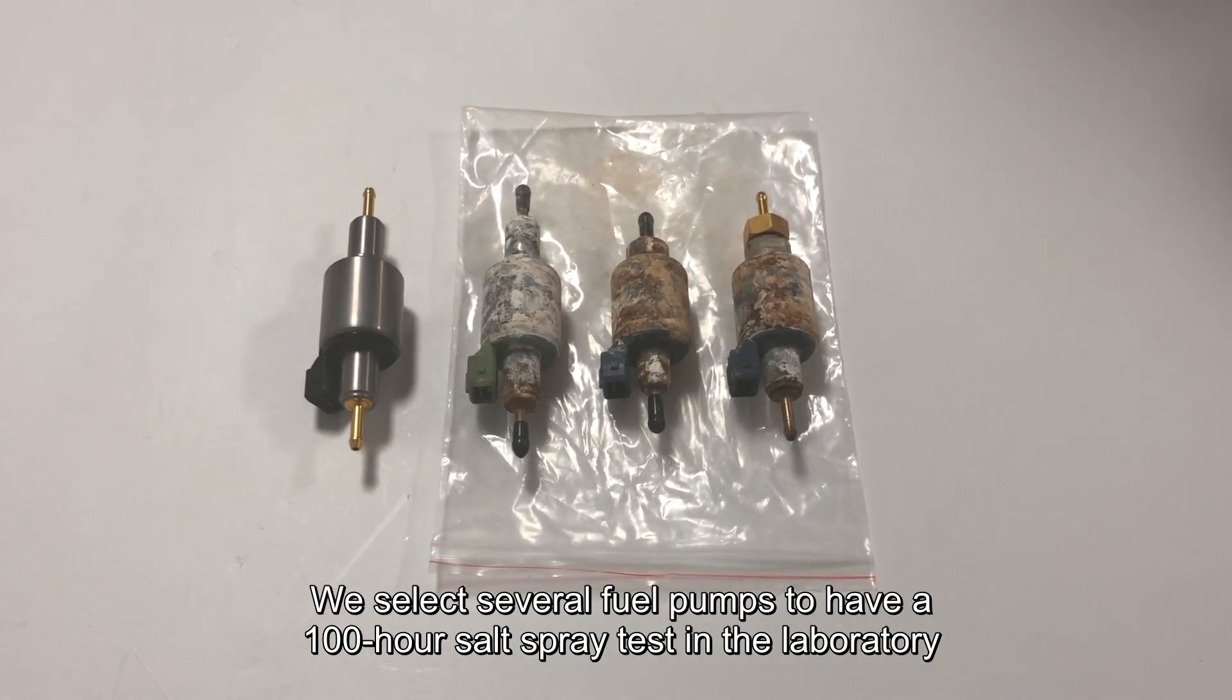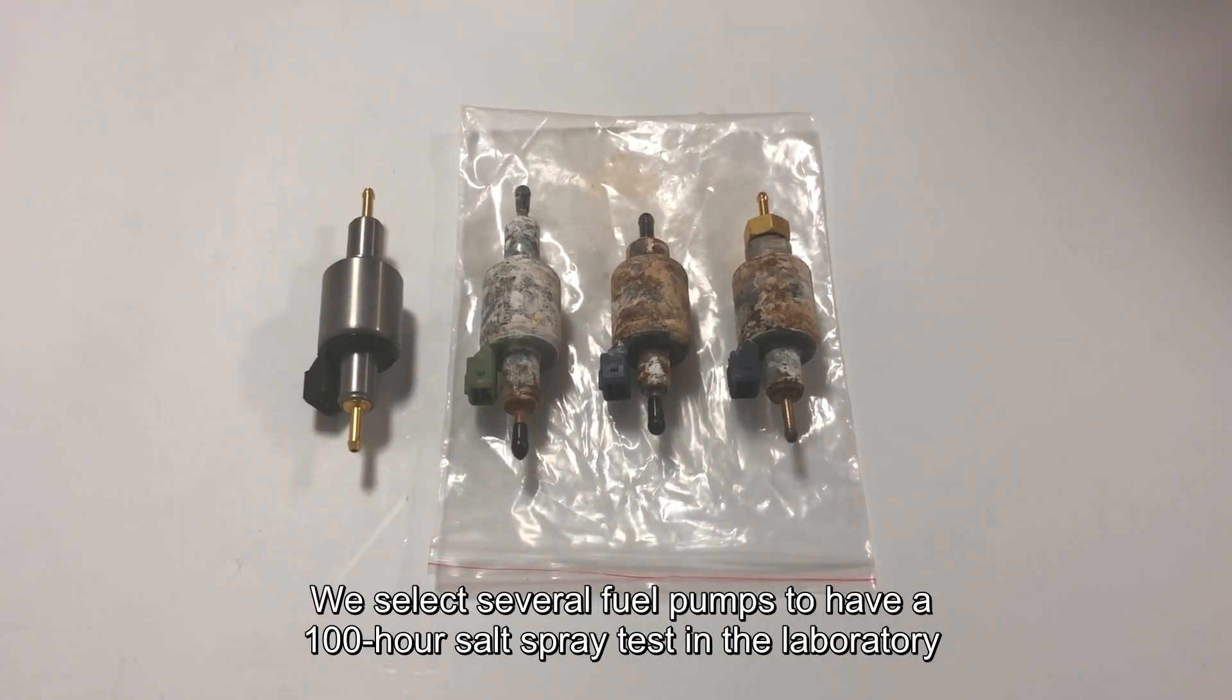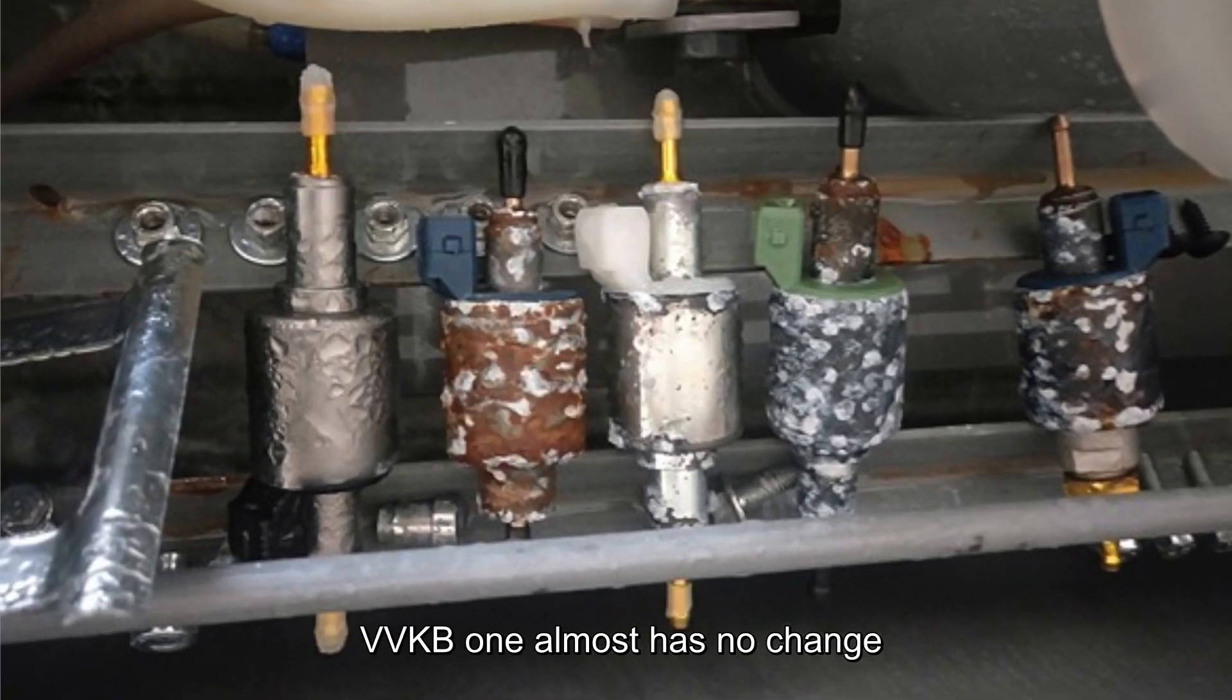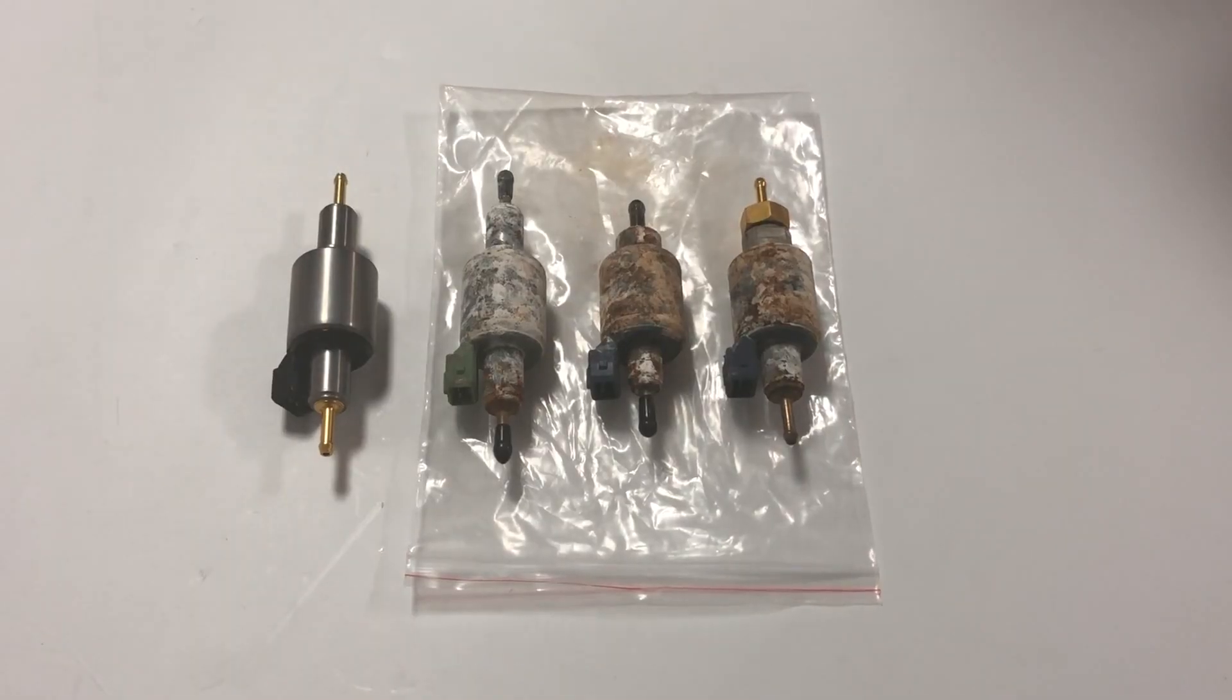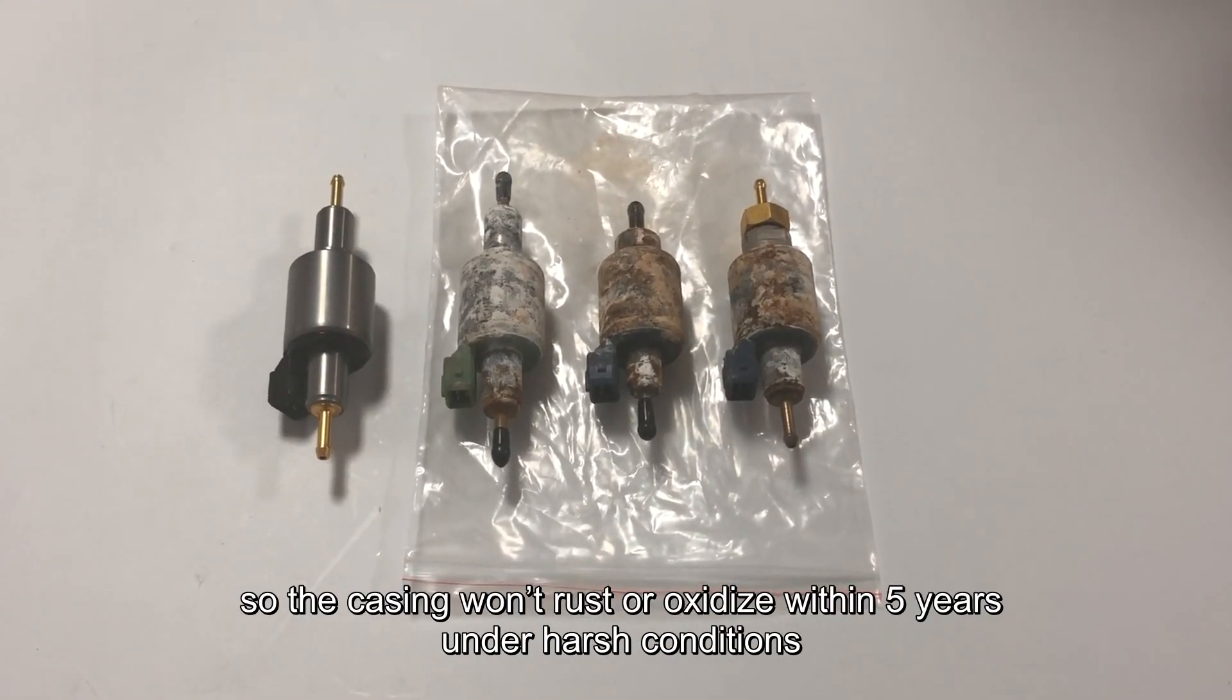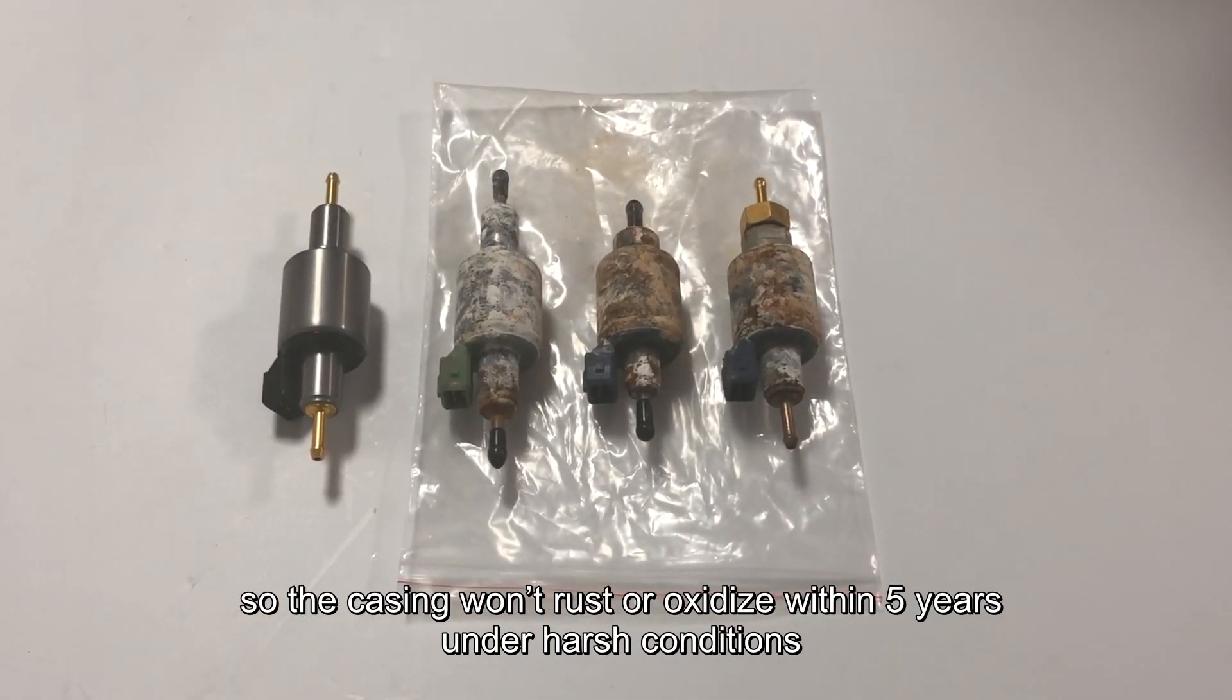We selected several fuel pumps to have a 100-hour salt spray test in the laboratory. VVKV-1 has no change. It's specially processed, so the casing won't rust or oxidize within 5 years under harsh conditions.